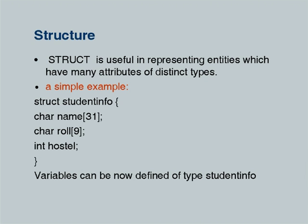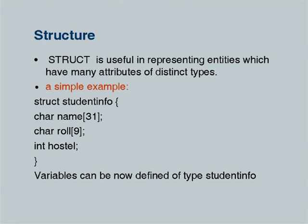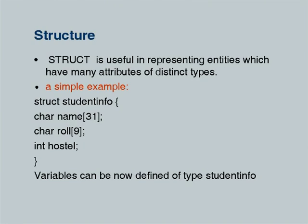Notice that `hostel` is of a different type altogether than `char` used for `roll` or `name`. We combine them together because when describing one student, you would like all related information put together under a single variable name. What we are defining — `student_info` — is not a variable name; it is a new type, like integer or character or floating point. Variables of the type `student_info` automatically inherit the three components: name, roll, and hostel.